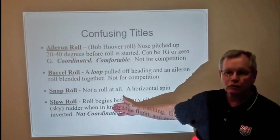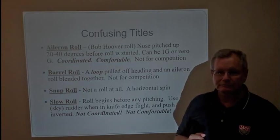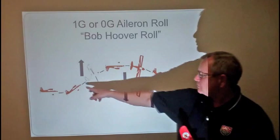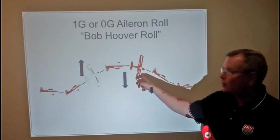The slow roll, on the other hand, is not coordinated, and I'm going to show you that here in just a second. When I mean aileron roll, I'm talking about something where you pitch up first, and then as you're rolling you stay coordinated all the way around.